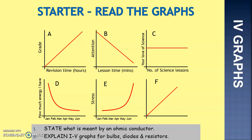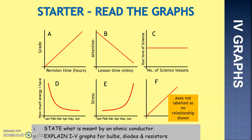Graph E shows stress and months. As time goes on in the year, stress increases. For graph F, there's no relationship — the axes aren't labelled, so we can't tell what's happening. When looking at a relationship in a graph, we need to see what both axes are labelled as, and see how one affects the other.